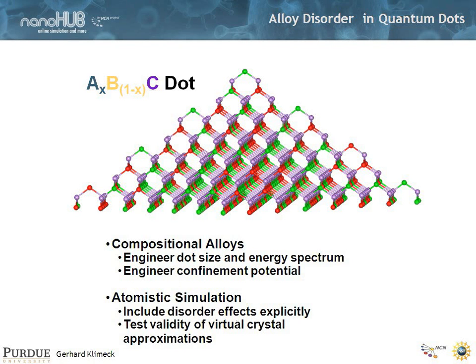The interesting thing happens if you have a nanoscale system like this, where maybe you have an ABC quantum dot where at A and B you can have an alloy. We can have compositional alloys where we engineer the dot size and the energy spectrum, engineer the confinement potential, and do an atomistic simulation where we can include this explicitly.